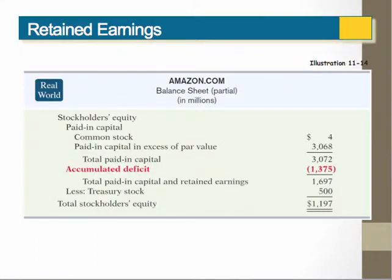Here's an example of what Amazon.com may have looked like when they had a deficit. Notice that there are brackets around the accumulated deficit instead of calling it retained earnings.